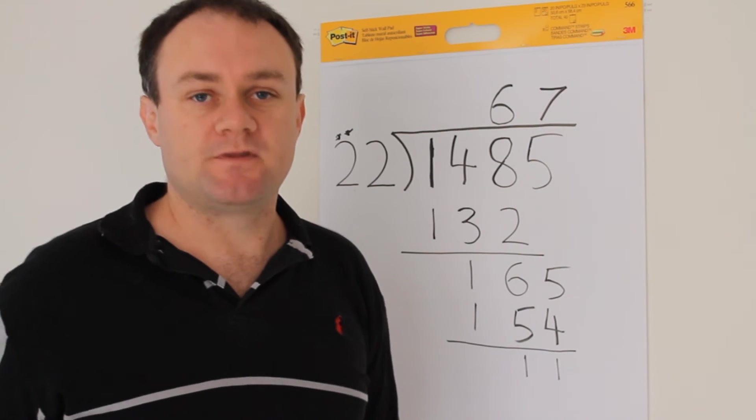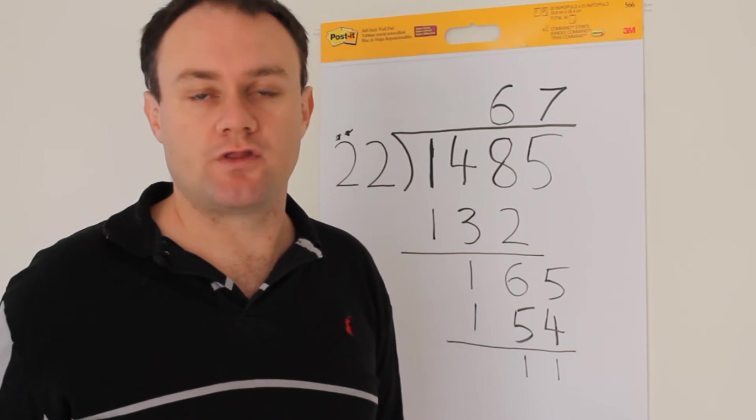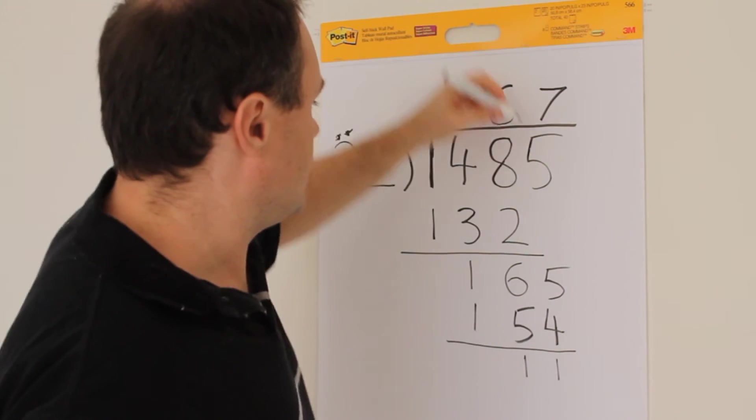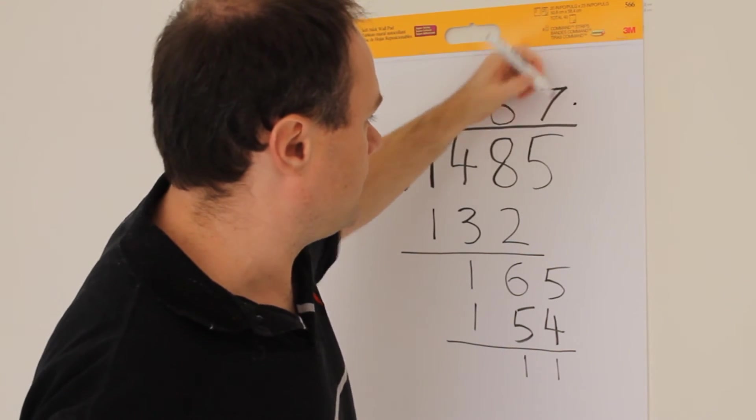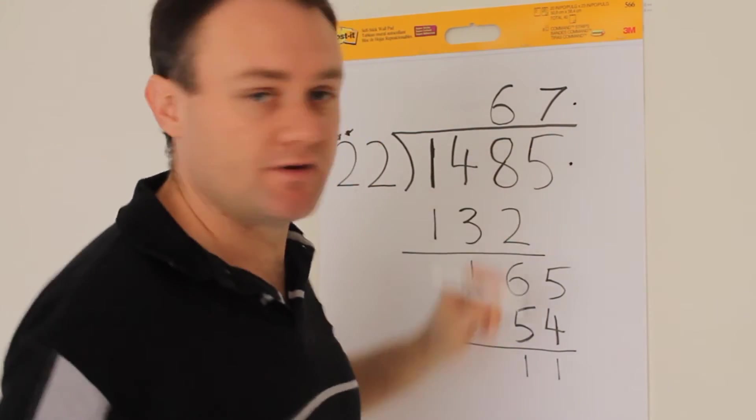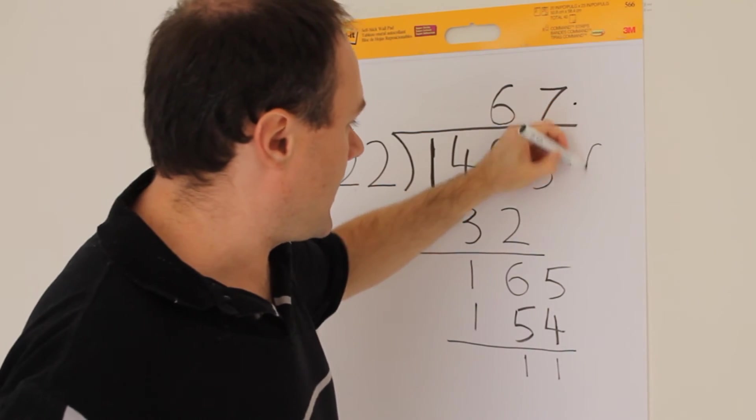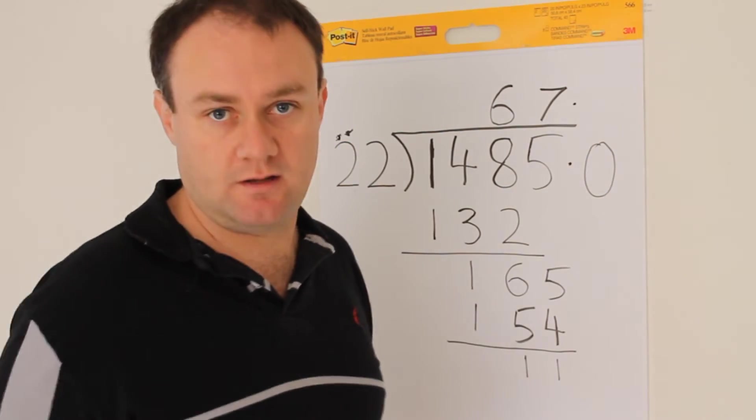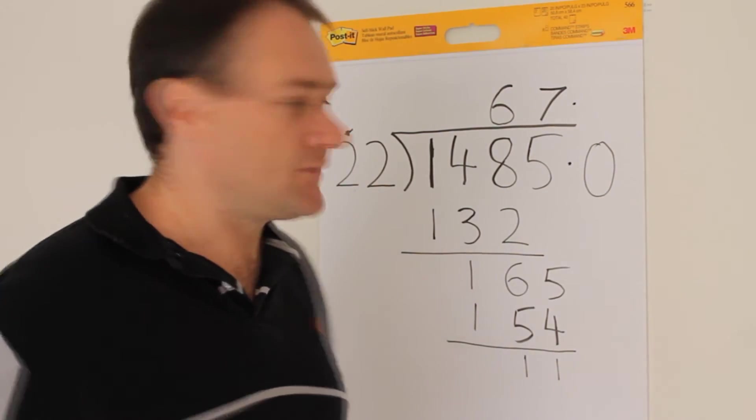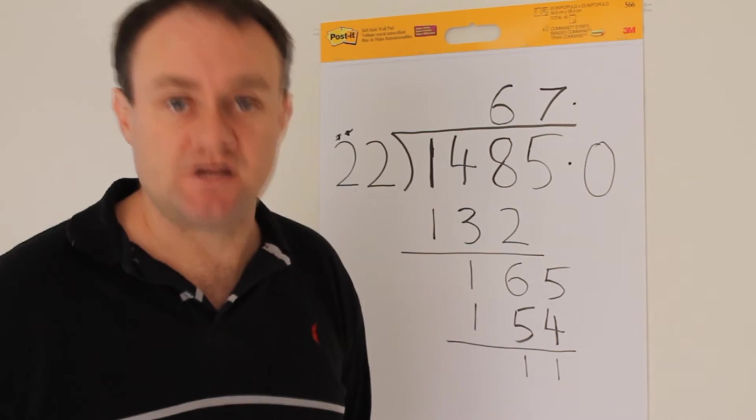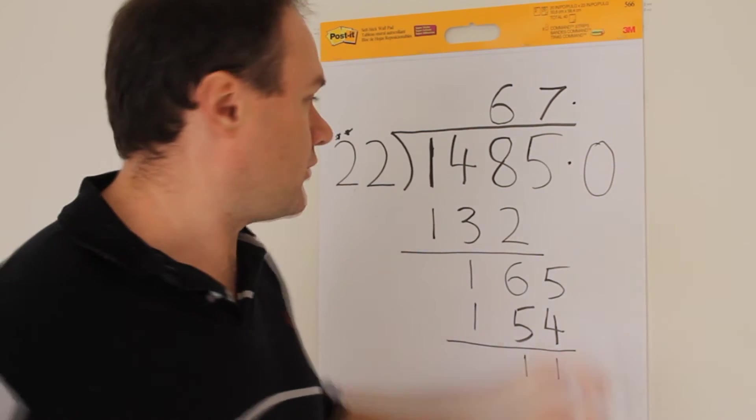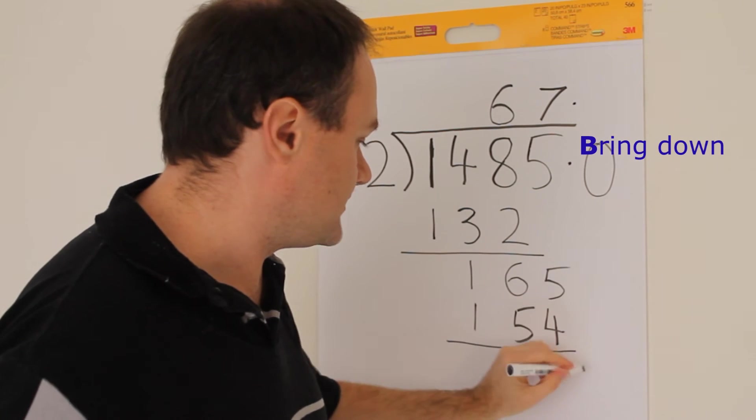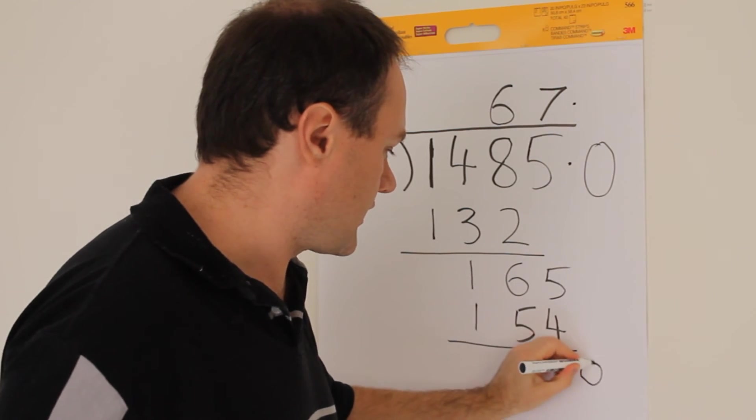The other way you can do it is to convert the remainder to a decimal. The way you do that is that you put in a decimal point here and a decimal point here, and you add a 0 here. You can add as many zeros as you want along here. We'll just add one. And then you simply continue with the process. The process now is we're up to the bring down phase. Bring down the 0 here. There goes the 0.